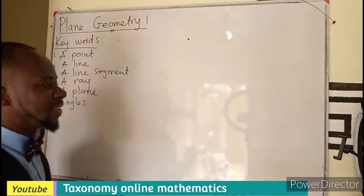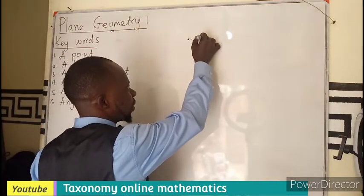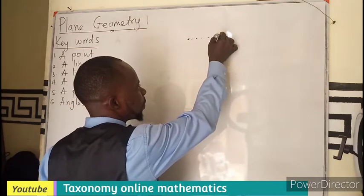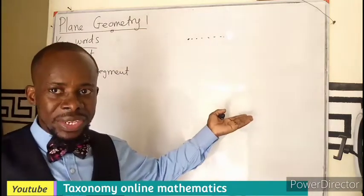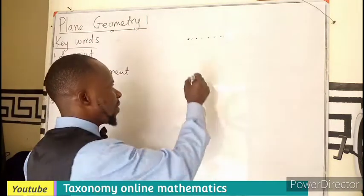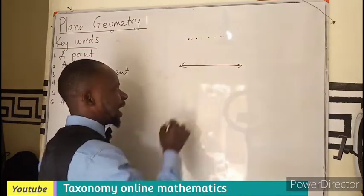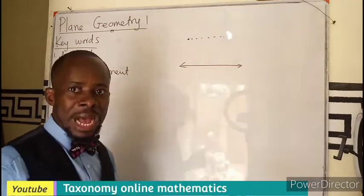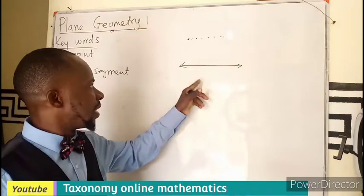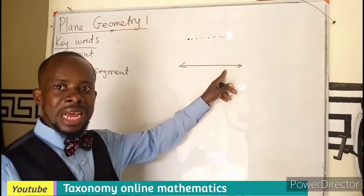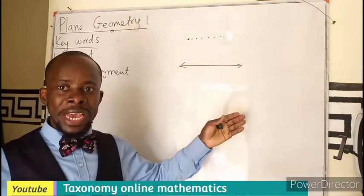A line is a series or a set of points which is extending in two directions. So if I have this, which we don't know where it will end, I'm having a line, because it's a series of points that come together with no end.